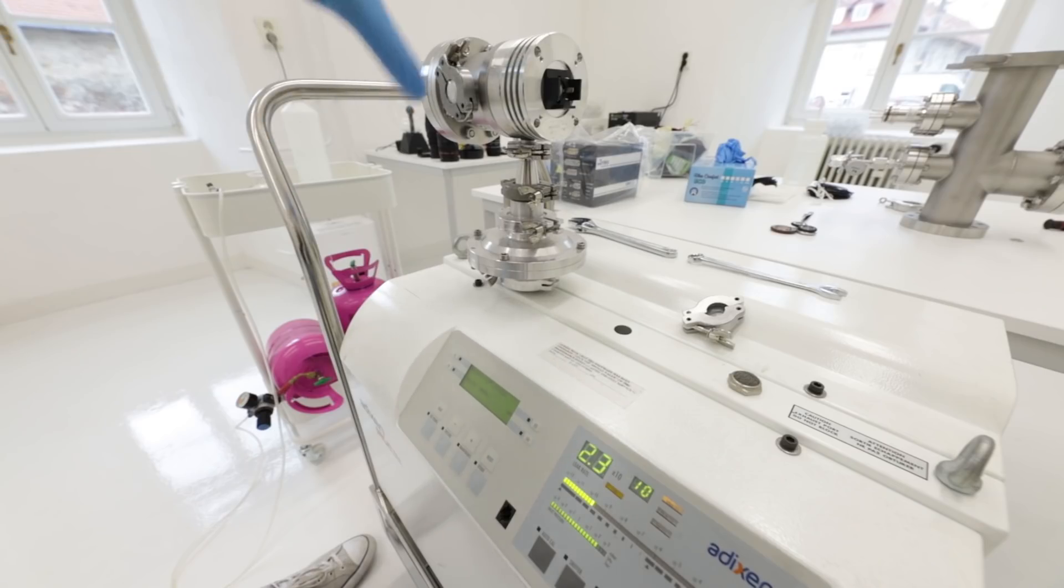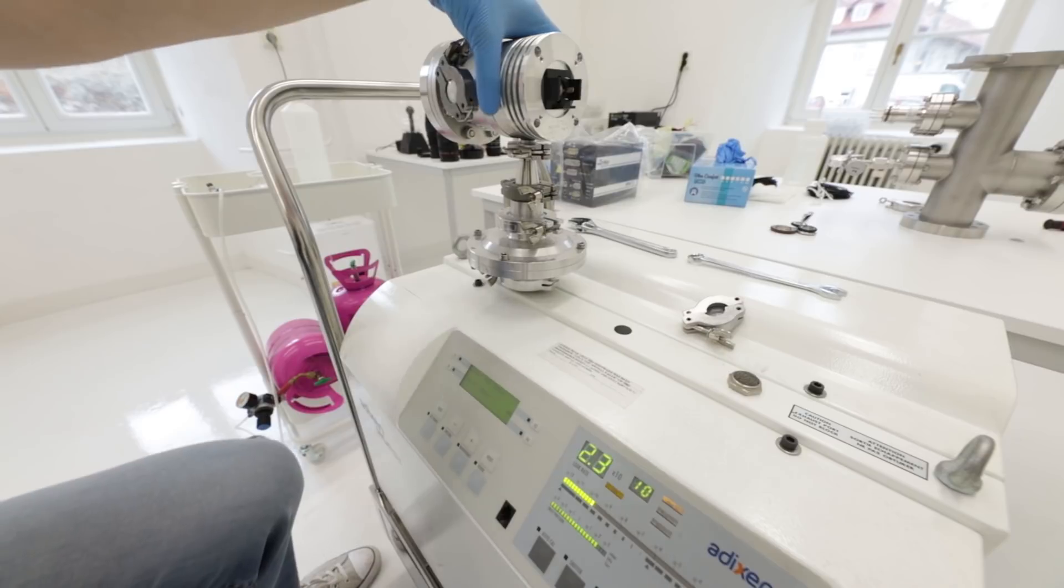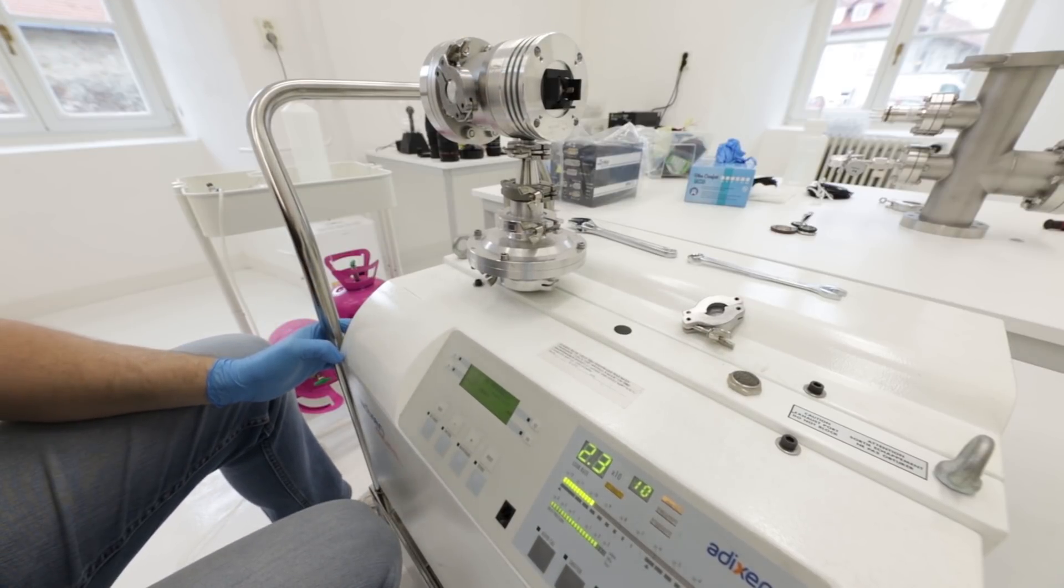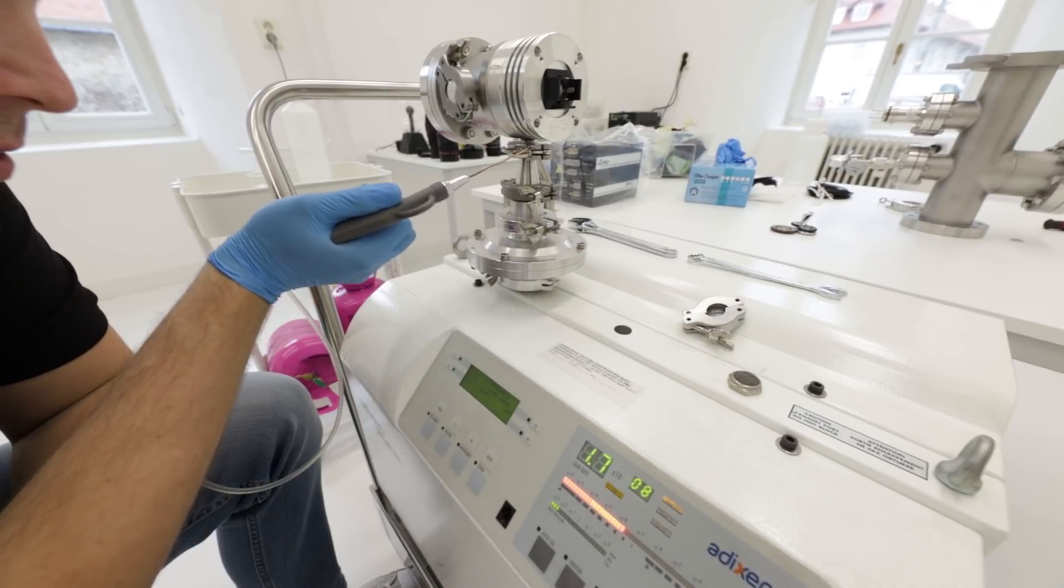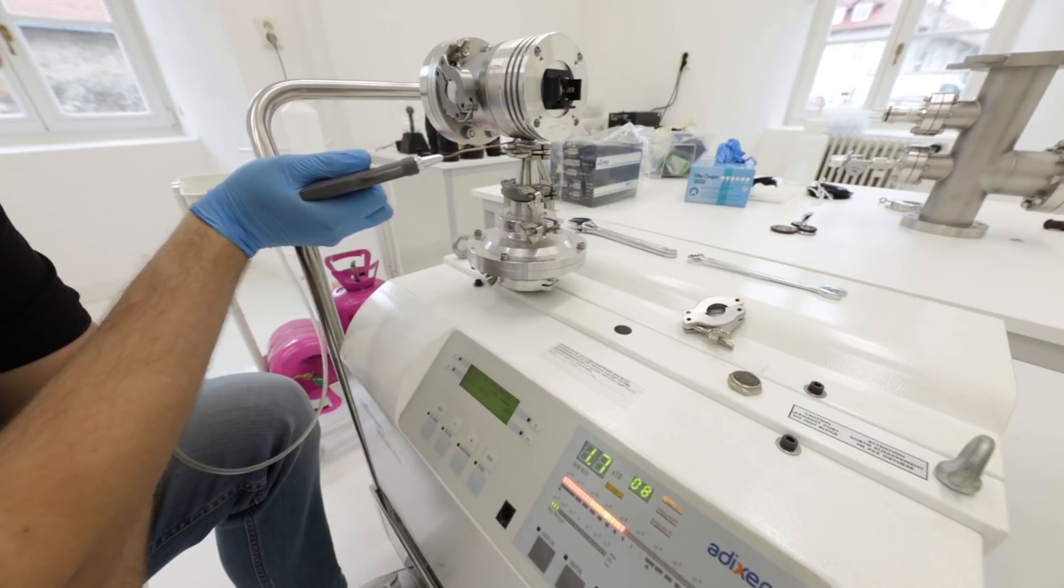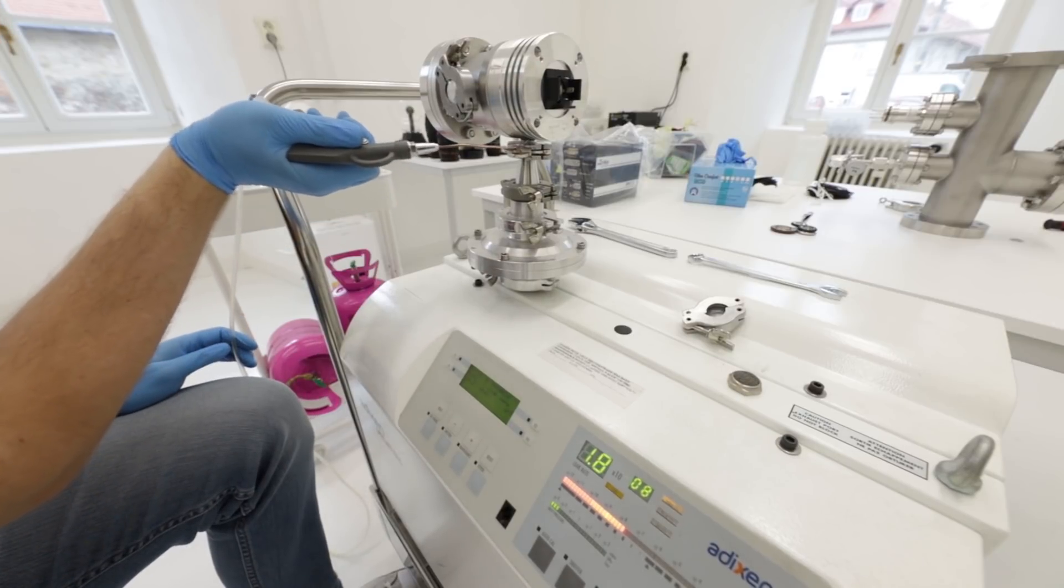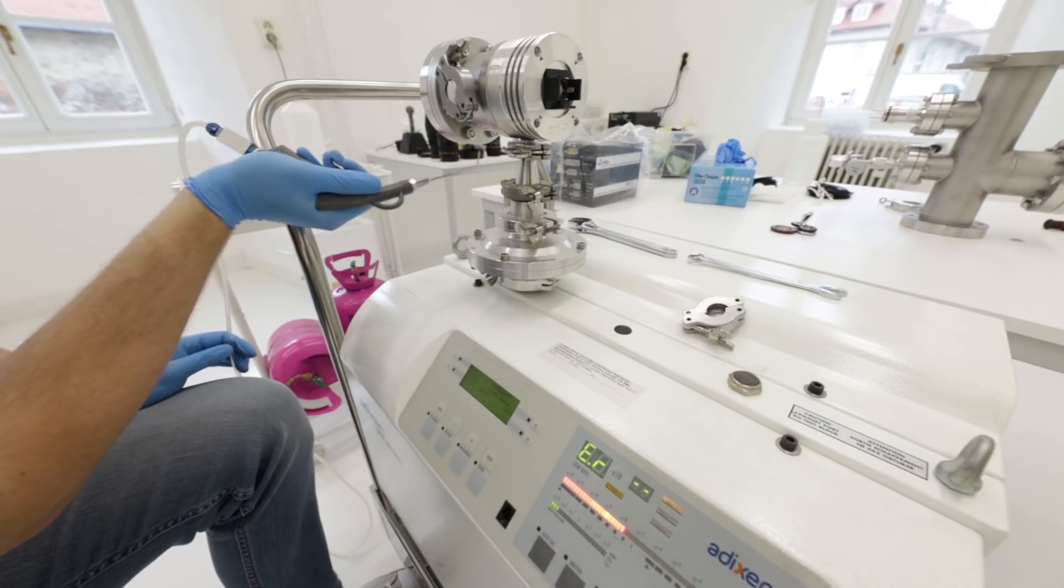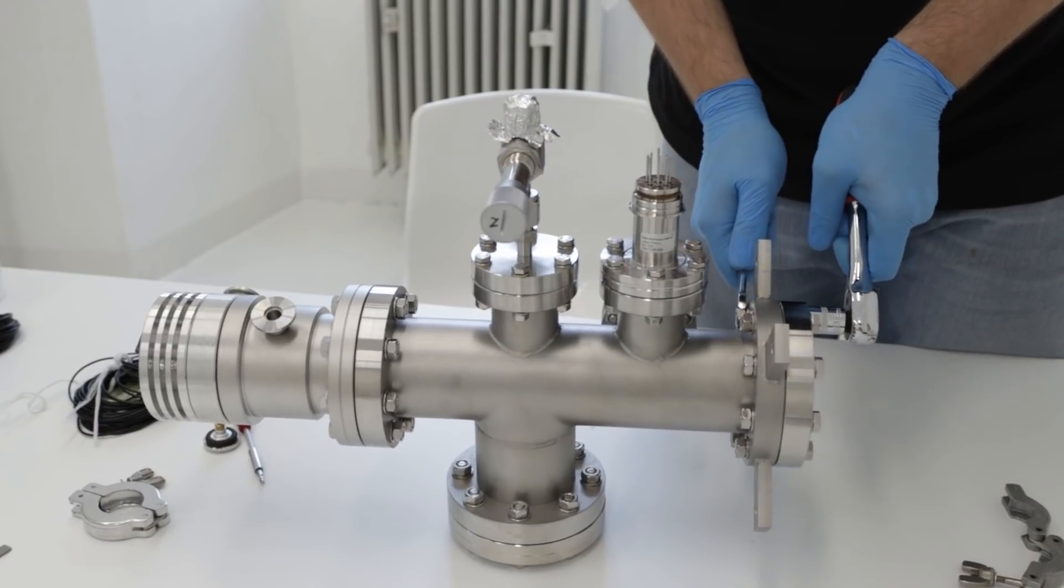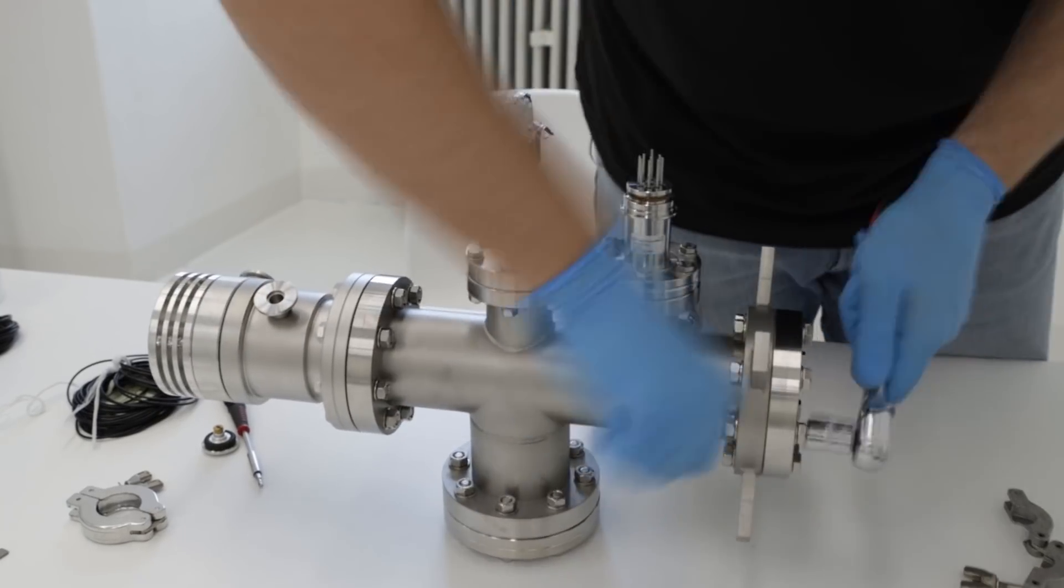So final test after replacing this bottom part. Let's hope that it will be fine. It looks good. There's no response to the helium, so it means we fixed the leak. The strong signal that we're getting is because everything is now saturated with helium - the machine, the air inside the room, everything. So it will take a couple hours to get rid of the helium.